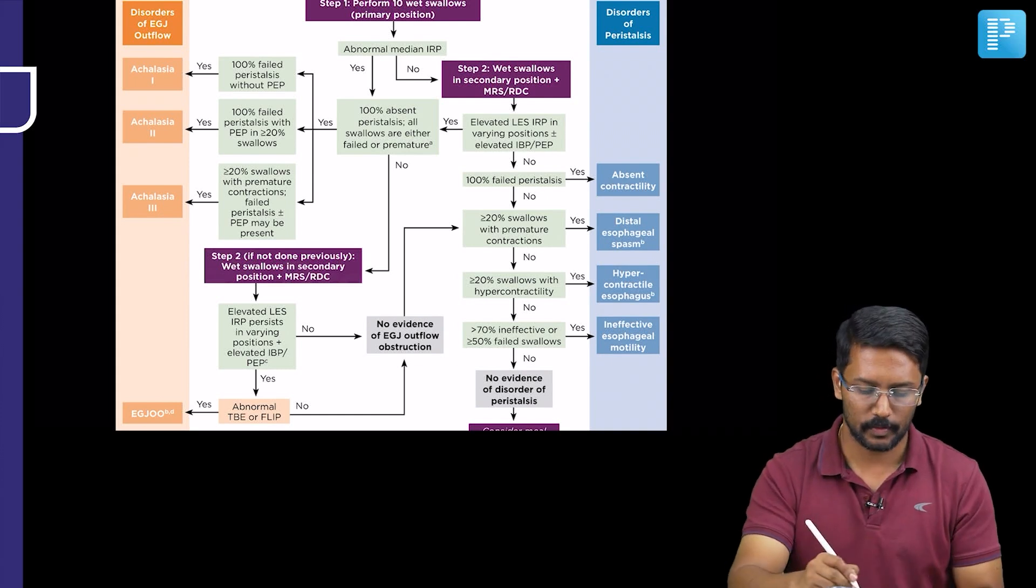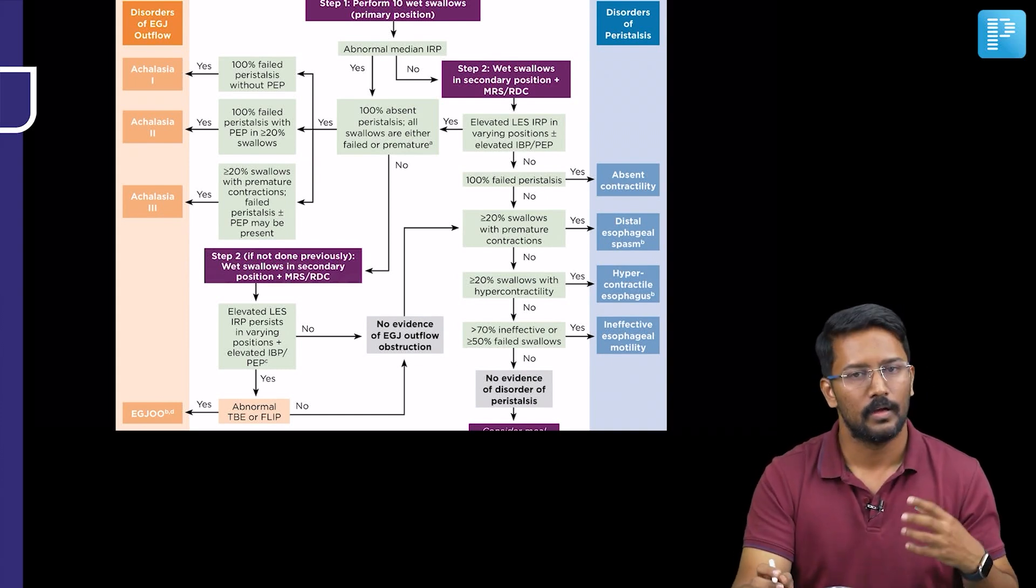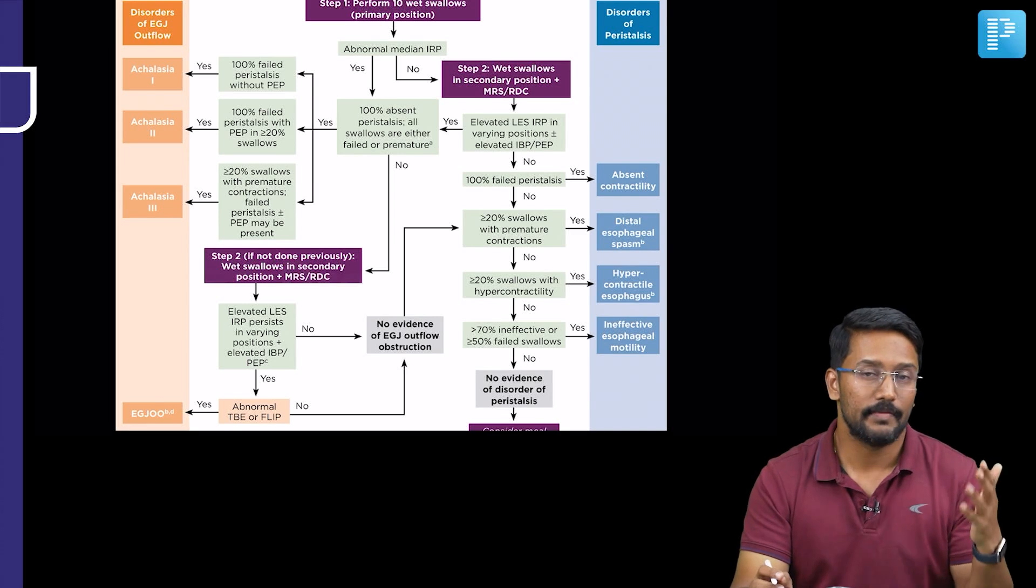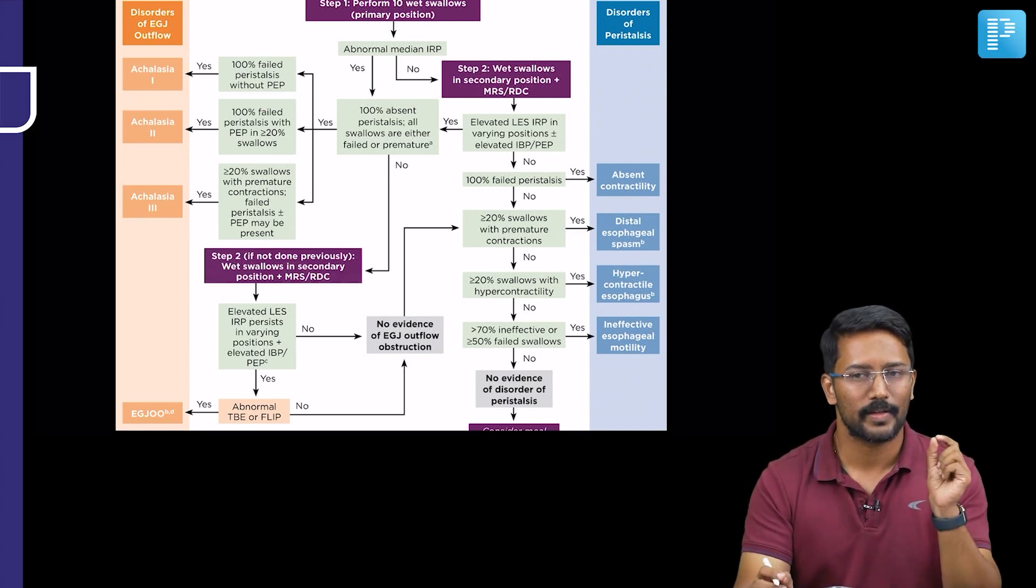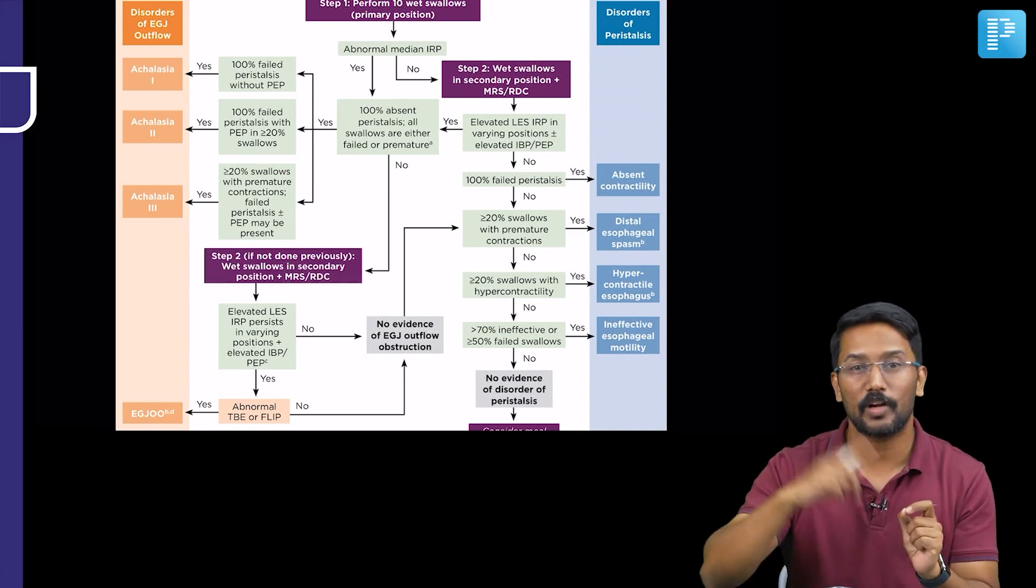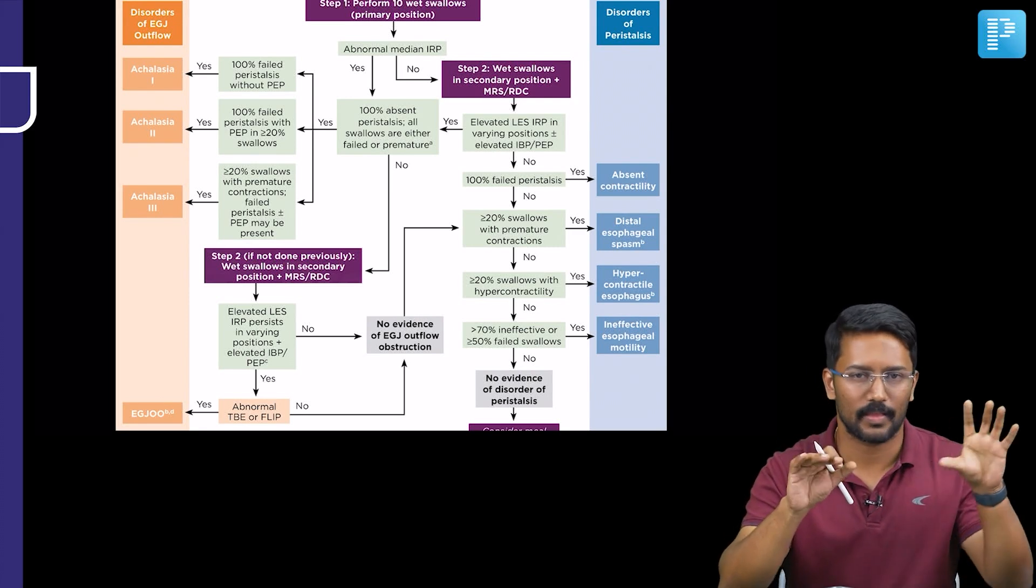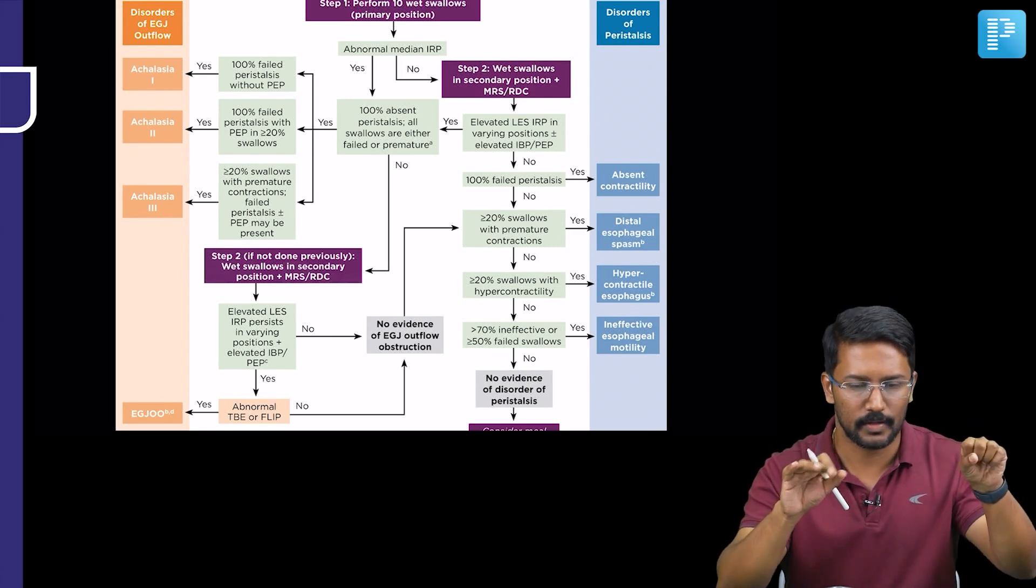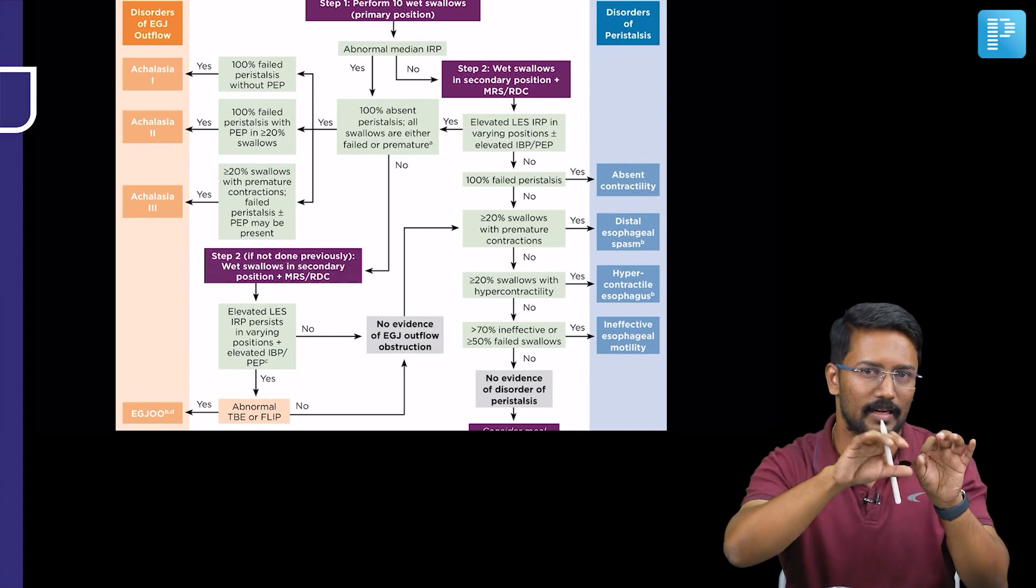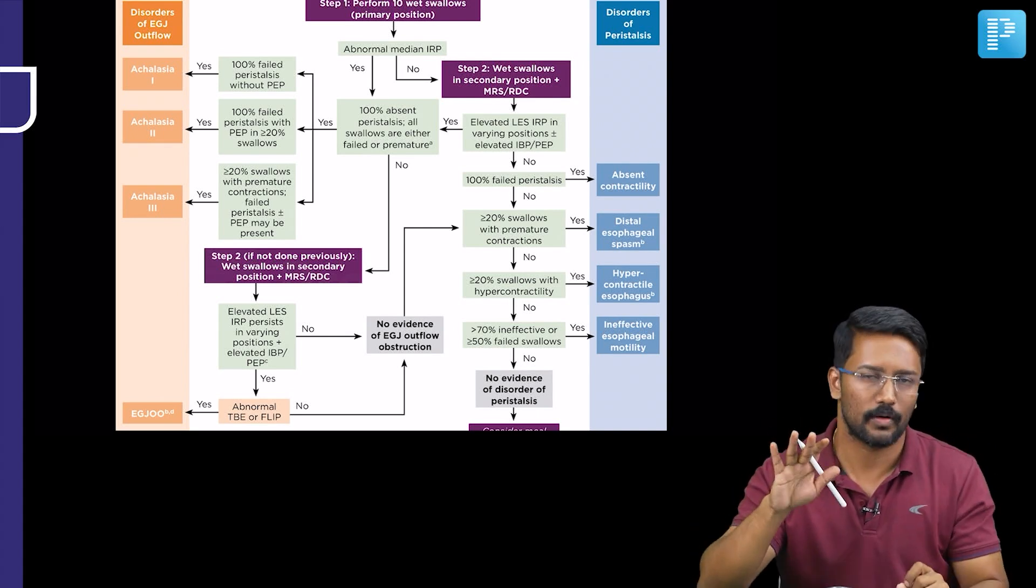Because here, apart from absent peristalsis or failed peristalsis and elevated median IRP, these patients experience severe spasmodic contractions of the esophagus, which are not peristaltic in nature. So different segments of the esophagus are simultaneously contracting. They are not like a contraction wave and bolus and the relaxation wave.